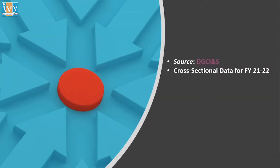We have data for financial year 21-22. The data is called cross-sectional when we have various entries for a single period of time, which here is financial year 21-22. We have data for 23 districts — as you know, West Bengal has 23 districts. We also have data for 196 countries, meaning West Bengal and all its districts made exports with these 196 countries during FY 21-22. A financial year runs from April 1st to March 31st of the next year.